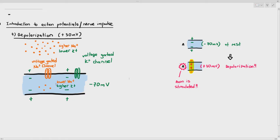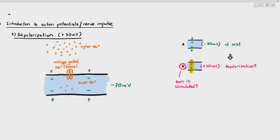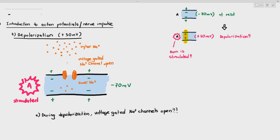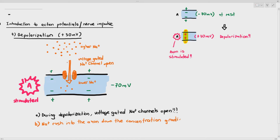During depolarization, the axon gets stimulated, and as a result, the voltage-gated sodium ion channels open. What is the consequence when the sodium ion channel opens? Looking at the concentration of sodium ions outside and inside the axon, facilitated diffusion will happen where sodium ions rush in. During depolarization, the voltage-gated sodium ion channels open and sodium ions rush into the axon, because they are moving down the concentration gradient from high to low.